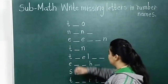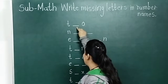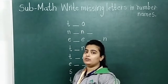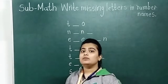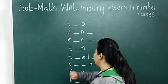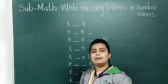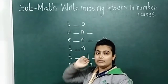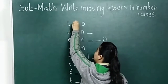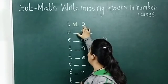So first, look here. Here some number names are written and some letters are missing — those letters we have to write. T, dash, O. We have to recognize which number name this is. T is here, then we write W, and O is written here. It means T, W, O — 2.